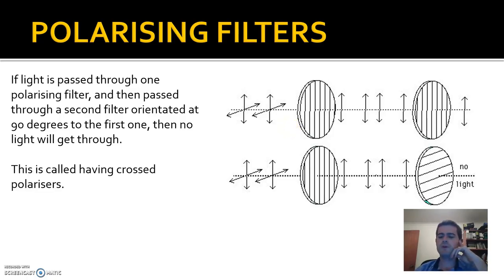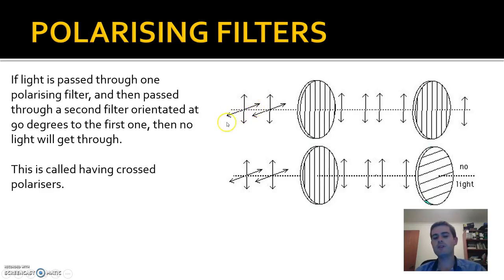If we have two filters one after the other and they're both orientated in the same direction, it's pretty simple — the light can just pass through both. Here we have light with vertical and horizontal polarization components. When that mixture meets a vertical filter, the vertically polarized light passes through and the horizontal light is blocked. If that vertical light then encounters another vertical filter, it'll pass straight through easily because it's already in the vertical direction.